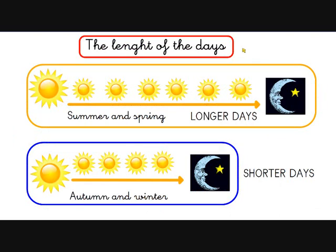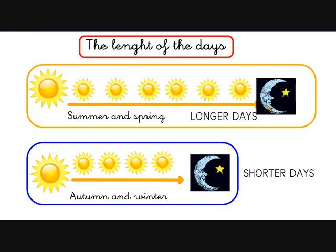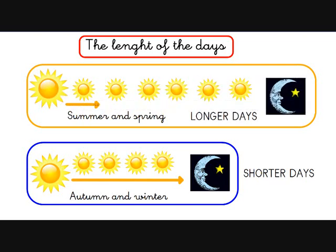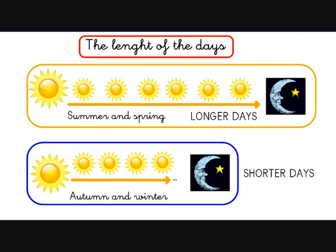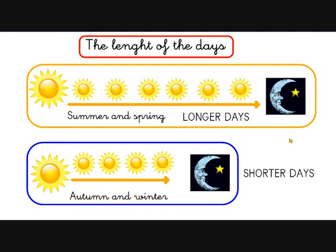So, let's have a look at the length of the days. How much light do we have in summer and spring? We have lots and lots of sun, because the days are long — longer days than in autumn and winter. In autumn and winter the days are short, not so long, no. Shorter days in autumn and winter, and longer days in summer and spring.